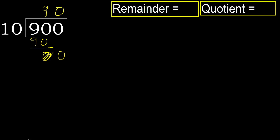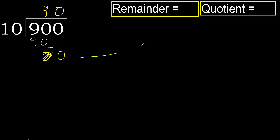Always complete with 0. Complete because here we finish with this number. Therefore 900 divided by 10 is 90.